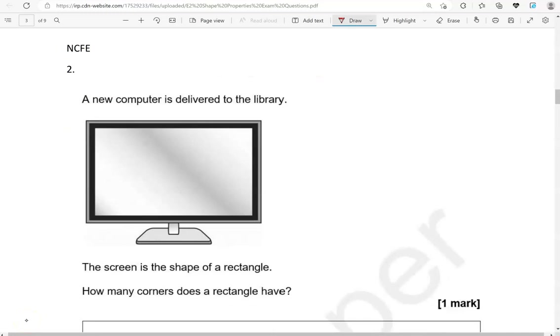A new computer is delivered to the library. The screen is the shape of a rectangle. How many corners does the rectangle have? It has 4: 1, 2, 3, 4.